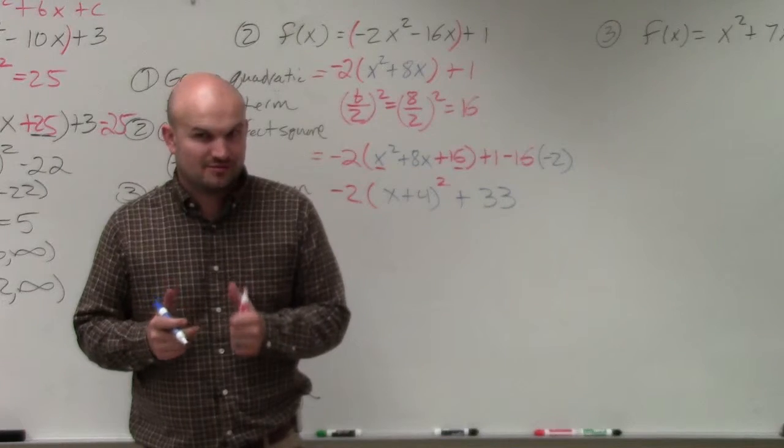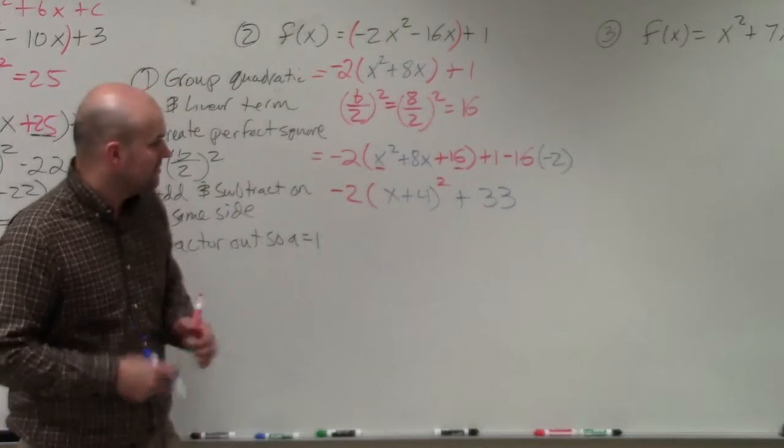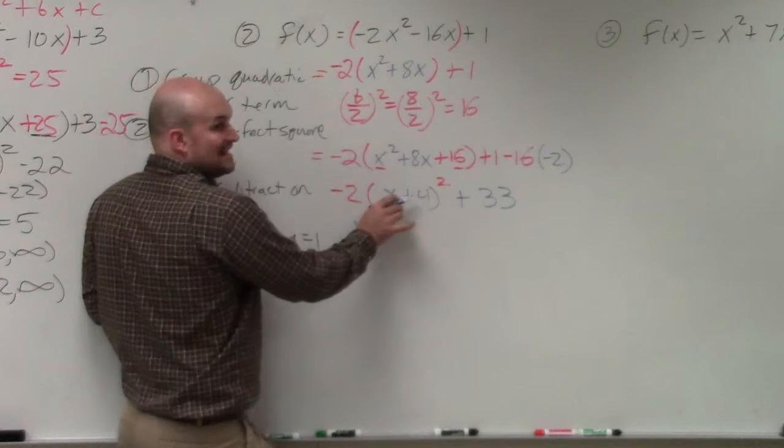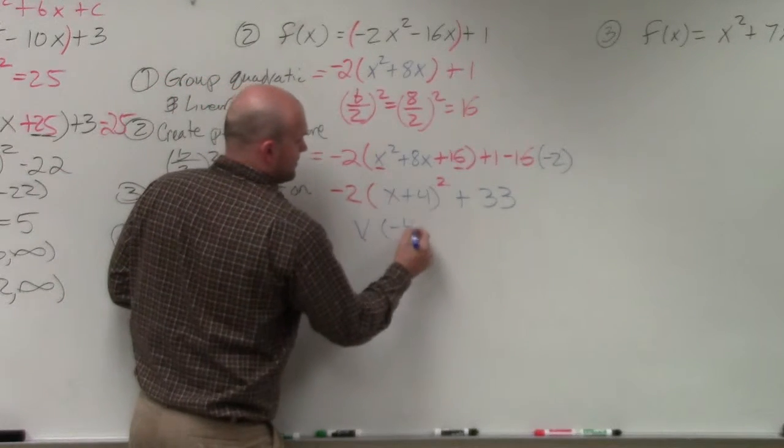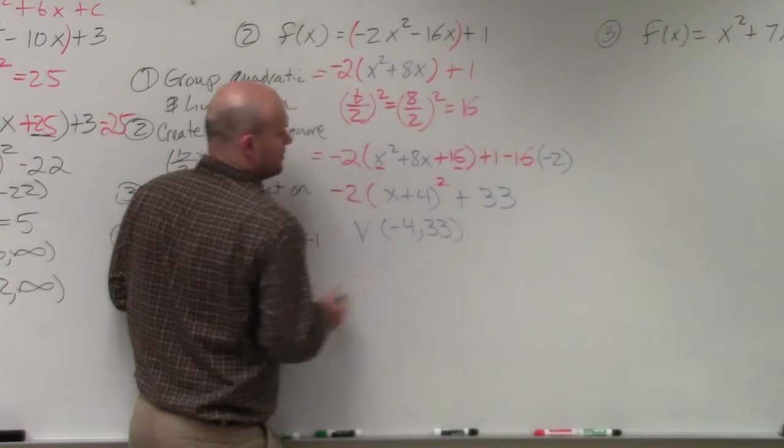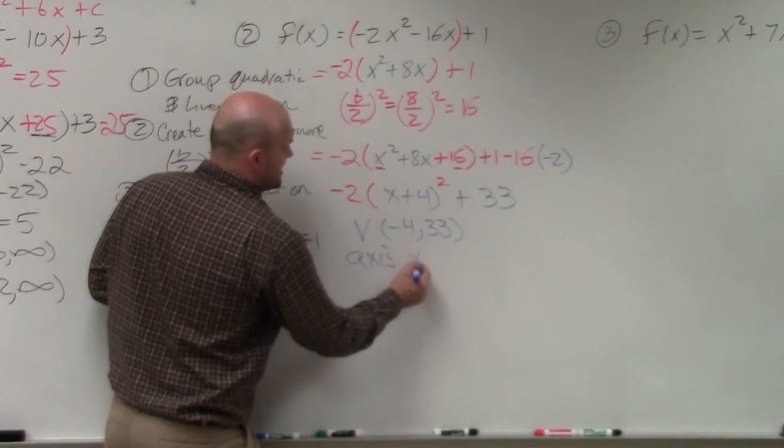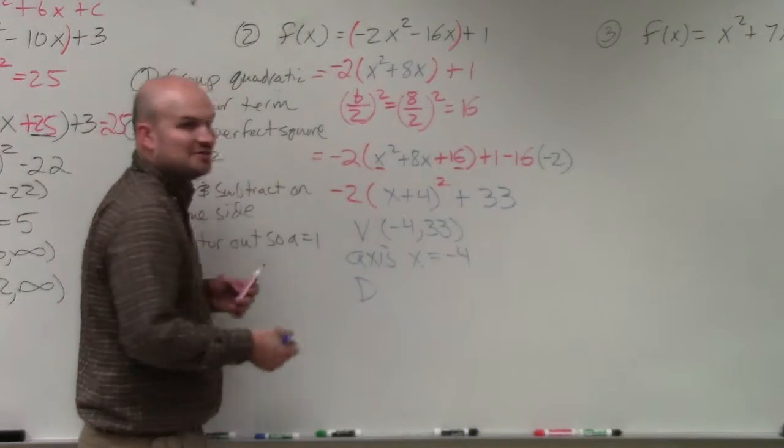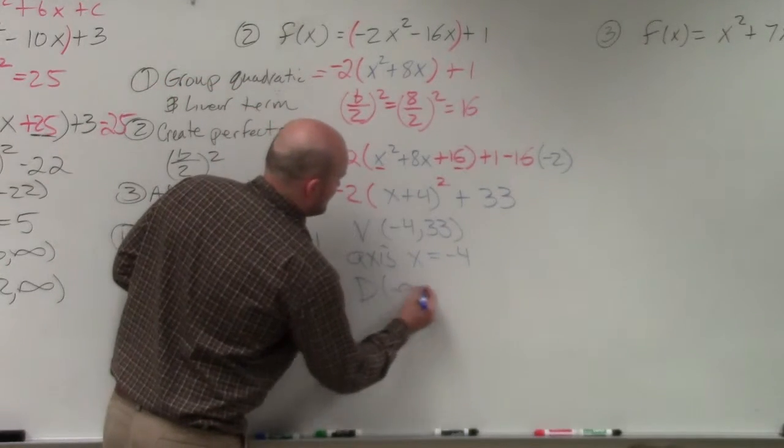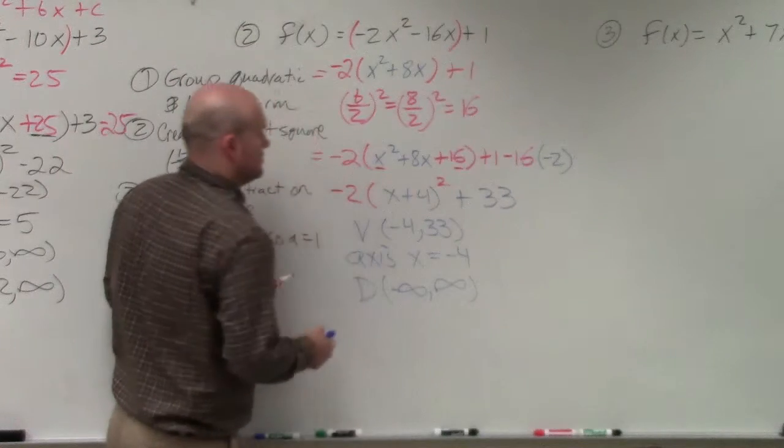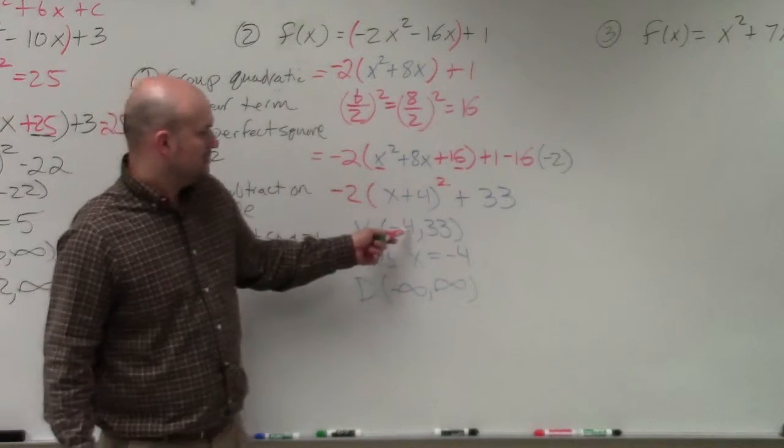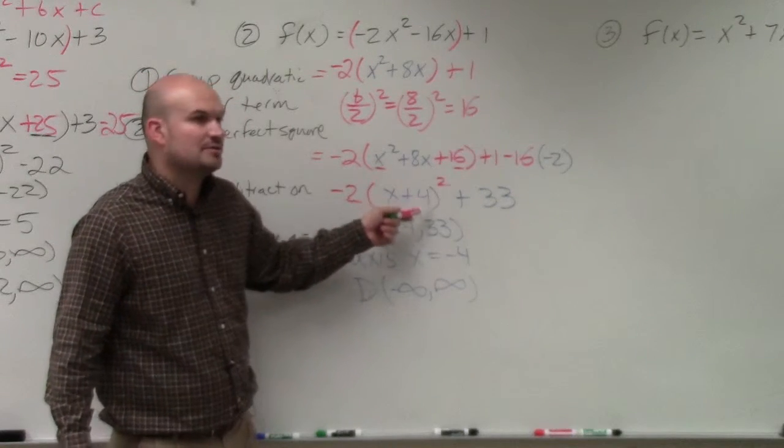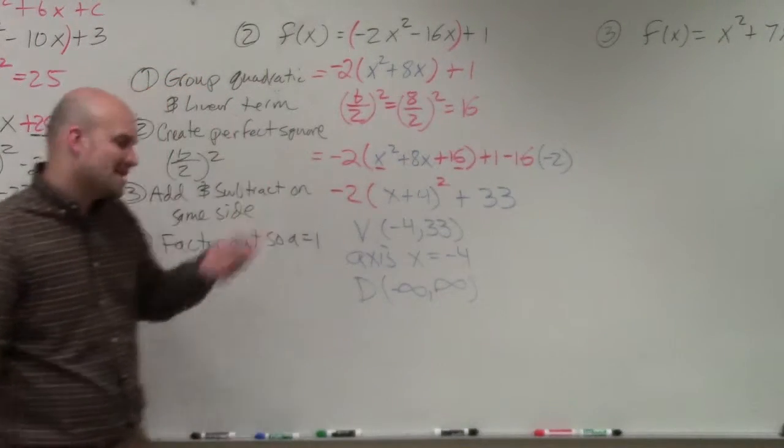Are you good with this? Because I'm not done. Because the range is what tricks people up. OK. So now, the vertex. Vertex is negative 4, 33. Axis of symmetry is just x equals h. The domain. Everybody loves the domain with quadratics. What is x? x, yeah. No. h is 4. h is equal to 4. That's what I was. Sorry. Sorry. Yeah.